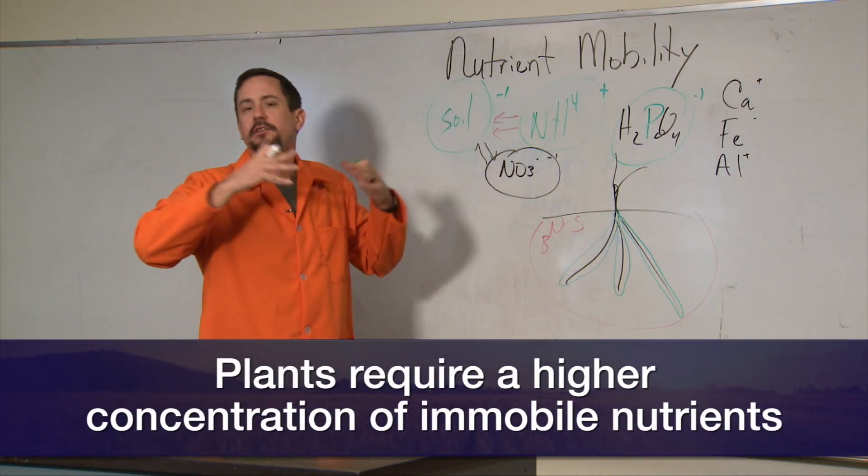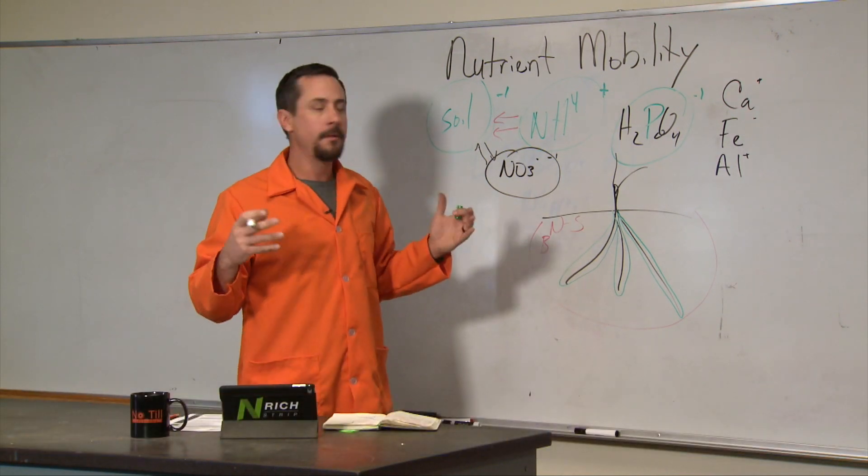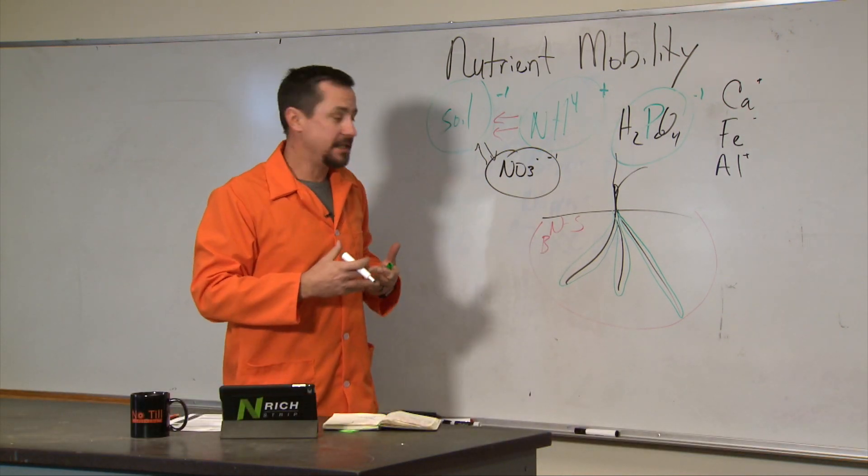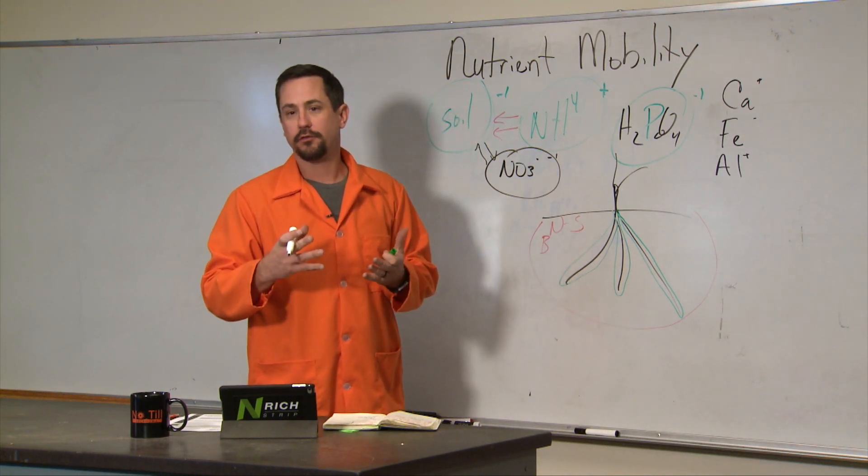So for yield, or on our mobile nutrients, we just need a total for the plant to use. But on our immobile nutrients, we need a concentration.